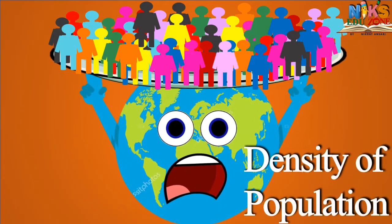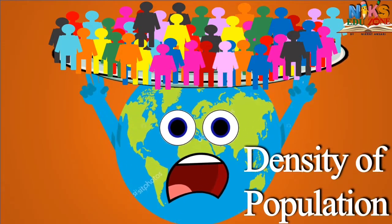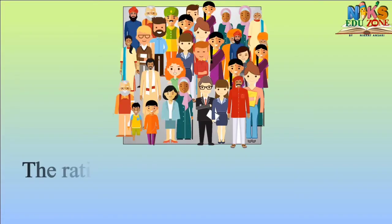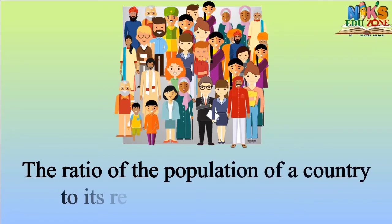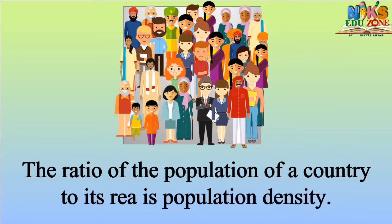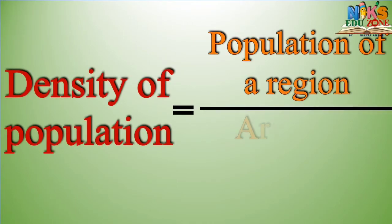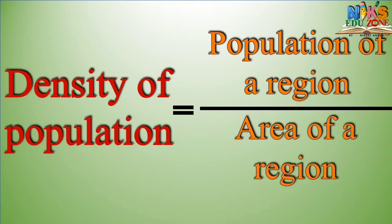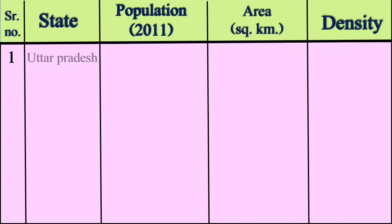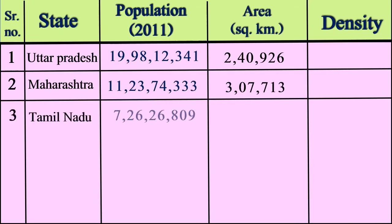The ratio of the population of a country to its area is called population density. While discussing population distribution, density of population is also considered. The density is calculated using the formula: Density of Population = Population of a Region ÷ Area of a Region. The total population and area of some states of India are given, from which density can easily be found.